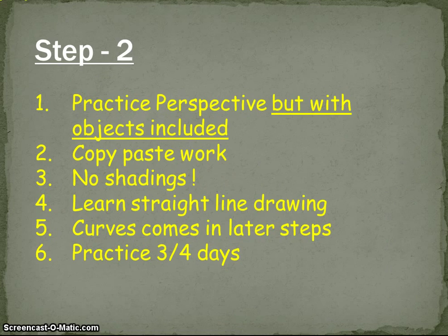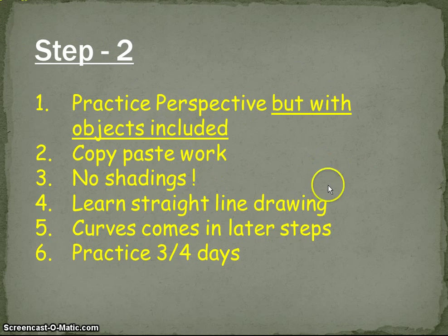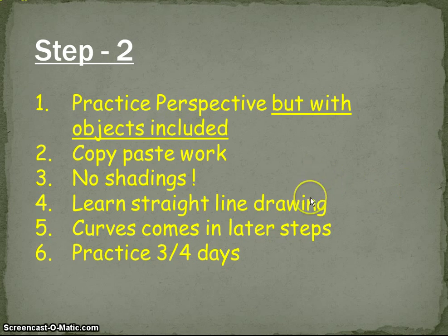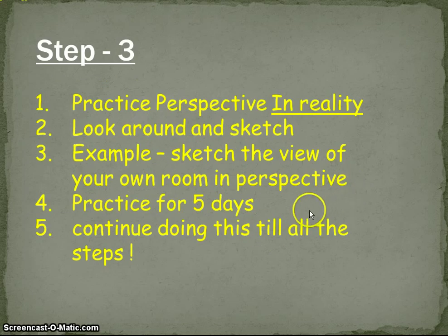After two or three days of basic perspective copy-sketching, move further. Now practice perspective with objects included. In the earlier exercise you just drew lines; now also include the objects shown there — chairs and other things. This is also basically copy-paste work. You don't need to worry about shading at all right now — shading comes in the middle part of the exercise. Just go for plain straight line sketches. Practice this for about three or four days.